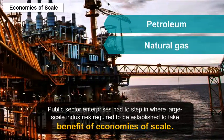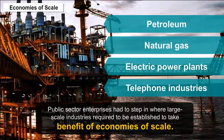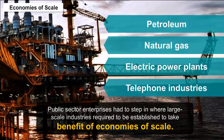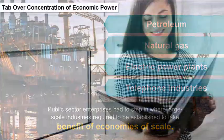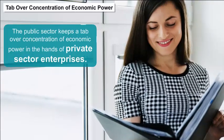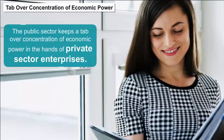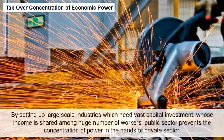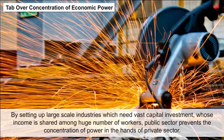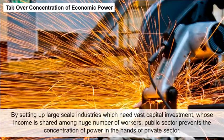Economies of scale: public sector enterprises stepped in where large-scale industries were required to take benefit of economies of scale. Petroleum, natural gas, electric power plants, and telephone industries are examples of public sector enterprises establishing large-scale units. Tab over concentration of economic power: the public sector keeps a check on concentration of economic power in the hands of private sector enterprises. By setting up large-scale industries which need vast capital investment, whose income is shared among a huge number of workers, the public sector prevents concentration of power in private hands.